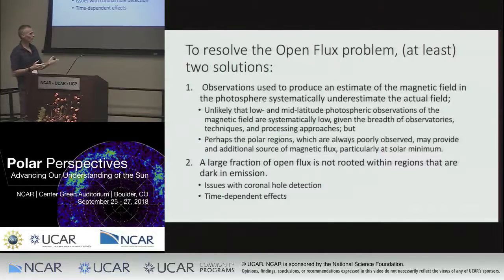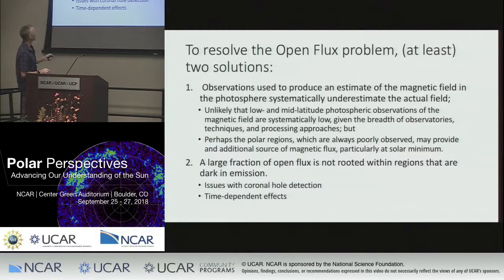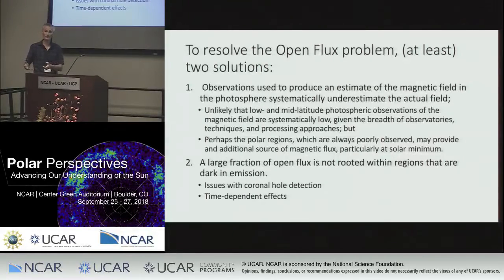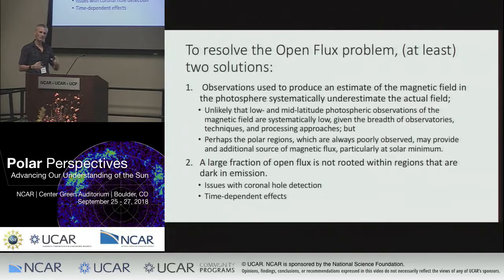Instead, the only possibility is that maybe there's a component of the field that we can't see very well that's actually providing a lot of the field we observe at 1 AU. And it turns out that a natural place for that is in the poles, because we can't see them. That's actually the main point of this talk. Another set of ideas is that maybe the flux isn't rooted within regions we think of as open. Maybe there are some issues with coronal hole detection — that's a valid argument, but John's analysis showed it's probably only a 5-10% effect and can't account for the factor of two.